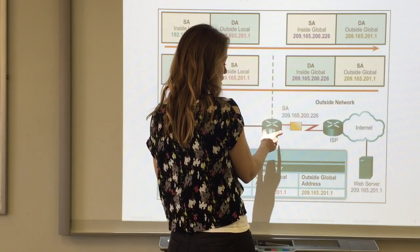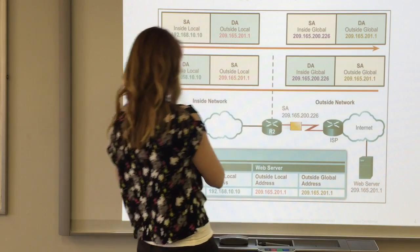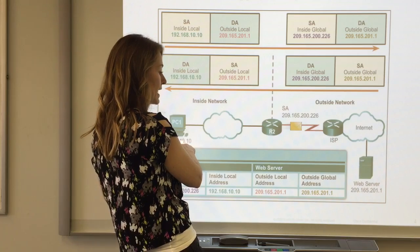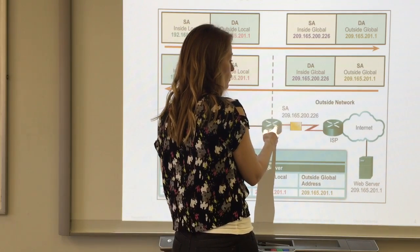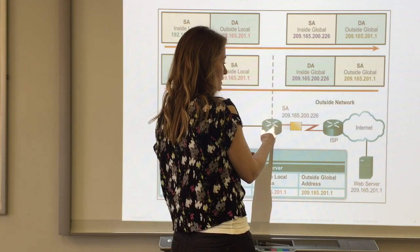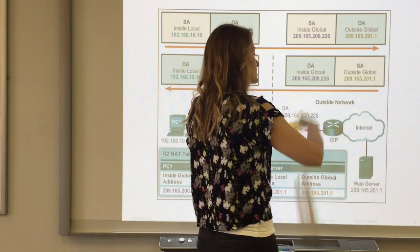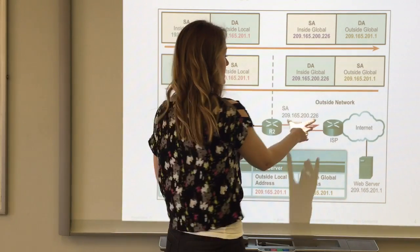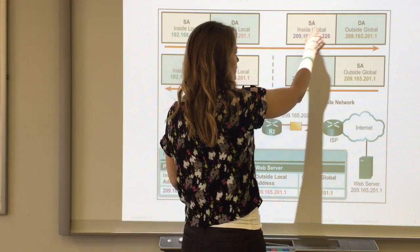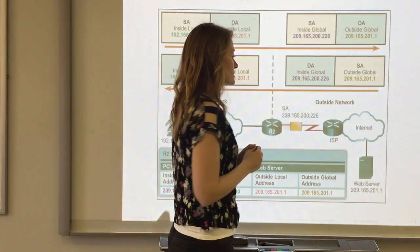Router R2 takes the 192.168.10.10 address and translates it to 209.165.200.226. The outside world will see that from address as this. This is now considered the source address.